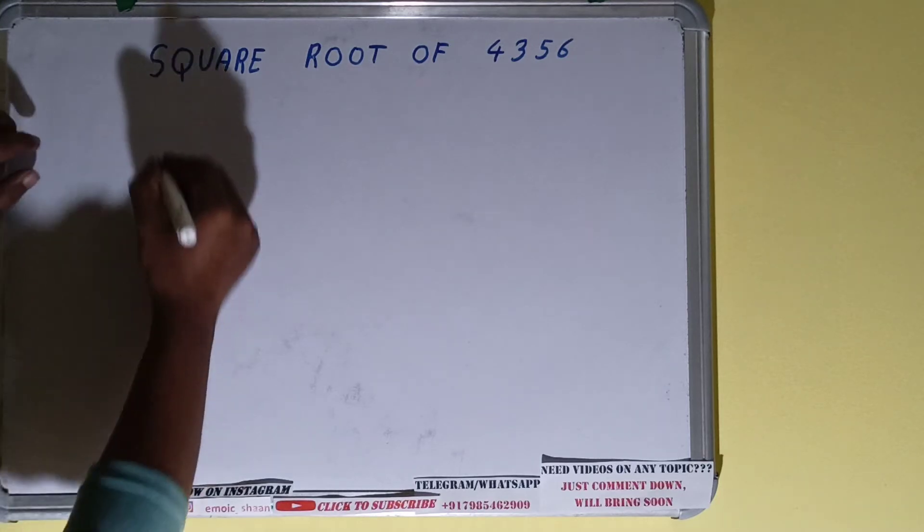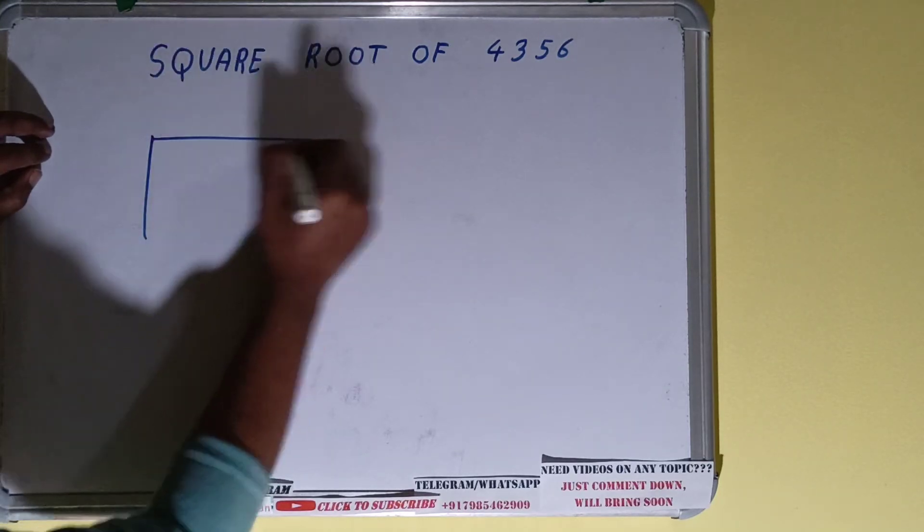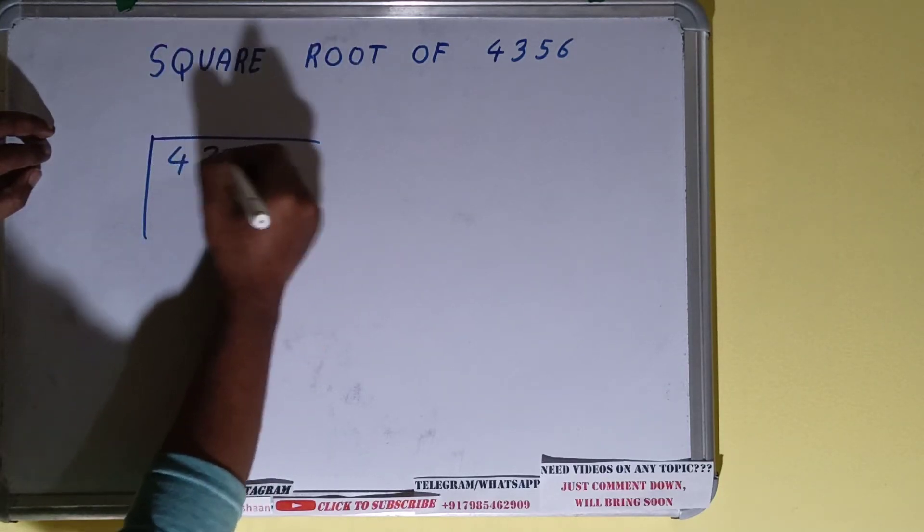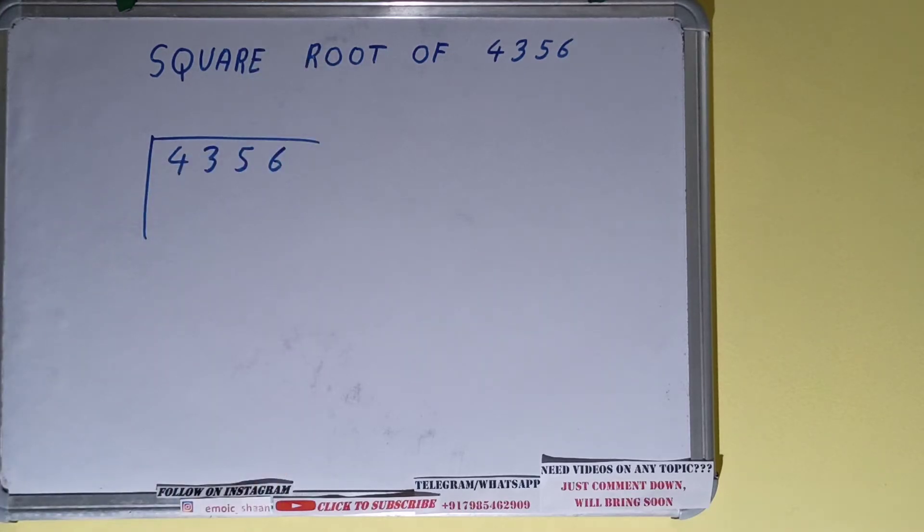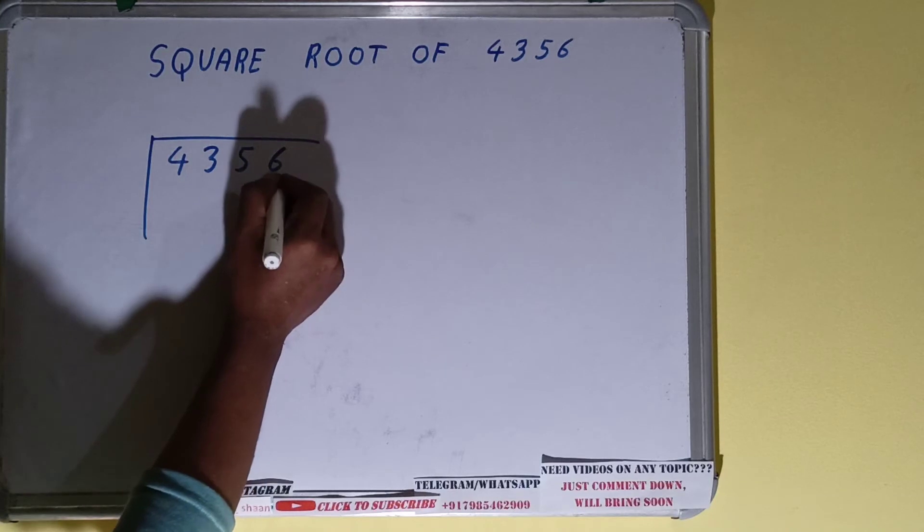First we need to write the number like this: 4356. The next thing we need to do is form pairs from the right. So we have got one pair, another pair.